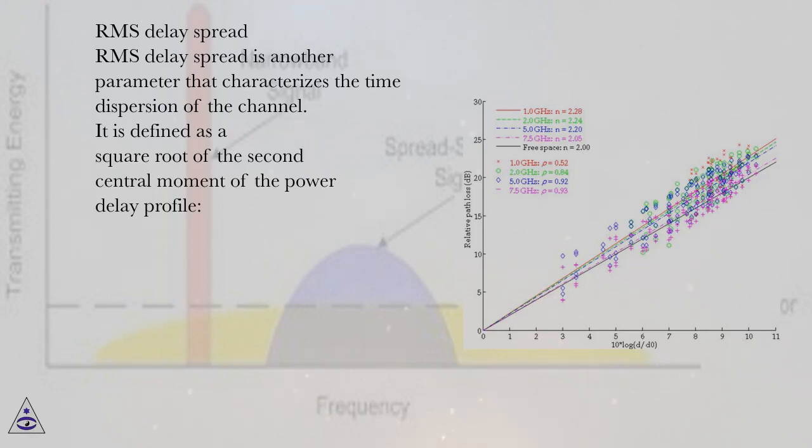RMS delay spread. RMS delay spread is another parameter that characterizes the time dispersion of the channel. It is defined as a square root of the second central moment of the power delay profile.